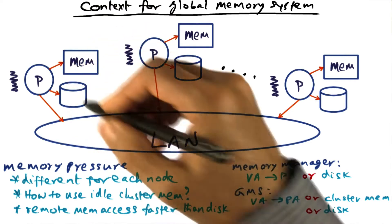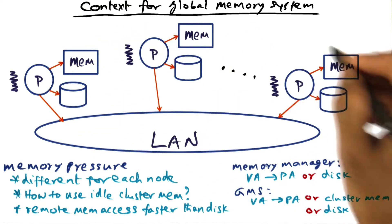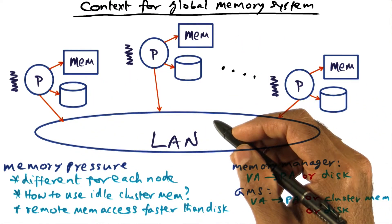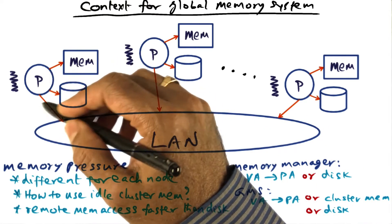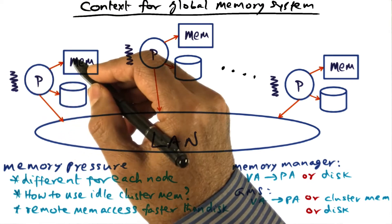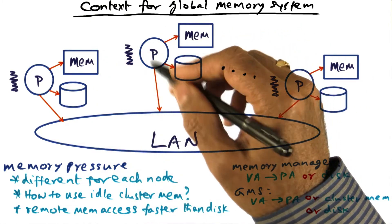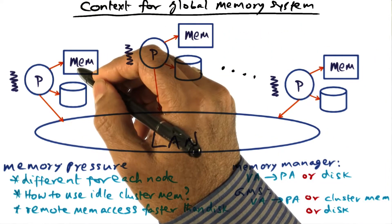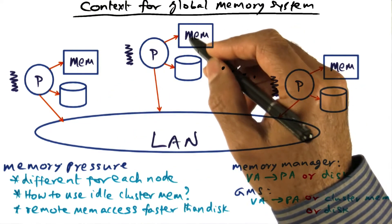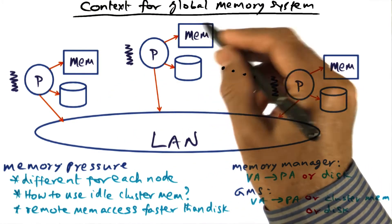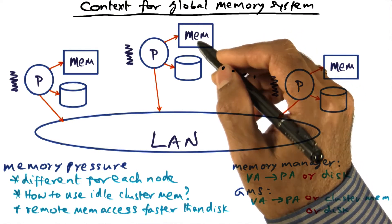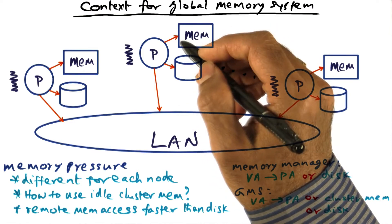Now, when a node — a desktop — is connected on a local area network to other peer nodes on the same local area network, it is conceivable that at any point in time, the memory pressure, meaning the amount of memory required to keep all the processes running on this node happy, may be different from the memory pressure on other nodes. This particular node may have a much higher memory pressure because the workload consumes a lot of the physical memory, whereas another workstation may be idle, and therefore all of its memory is not being utilized for anything useful because no applications are running on those nodes.